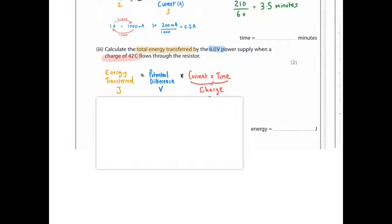Calculate the total energy transferred by 6 volts of power supply when a charge of 42 coulombs flows through the resistor. Energy transferred is potential difference times current times time. Remember, charge is current times time. So current times time is charge. This is how it's at the back of the paper in the formula sheet, but you have to recognize that charge is current times time. So that's the tricky part here, knowing that this is the same as this. So 6 times 42 is 252 joules. Once you've figured this bit out, and that's the tough part, the rest is easy.